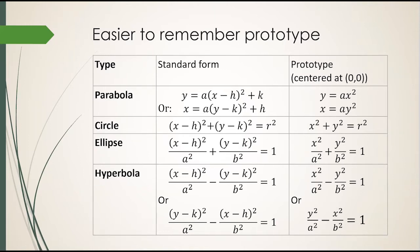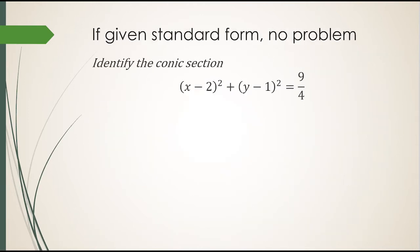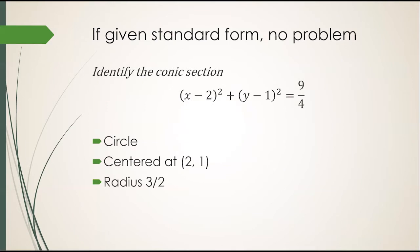If the equation is given to you in standard form, then it should be straightforward if you know the forms. You look at this equation and you recognize that it's a standard form of a circle. The center is at 2 comma 1 and the radius is equal to the square root of 9 fourths or three halves.